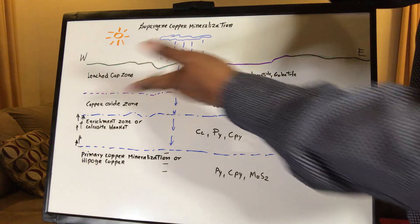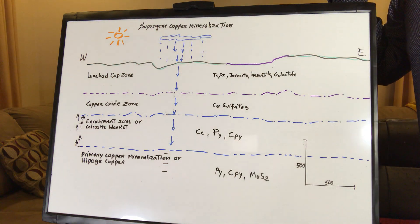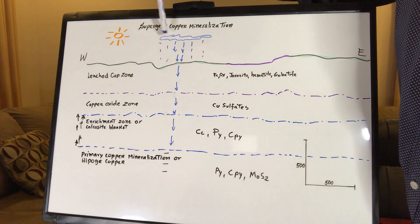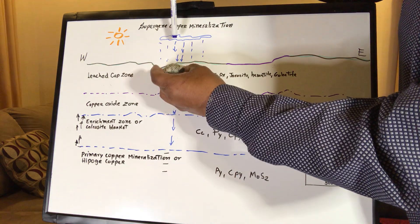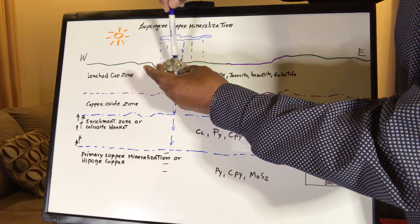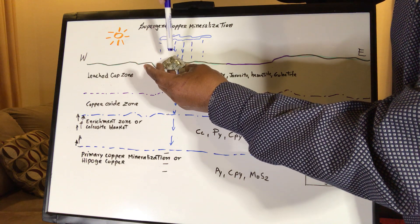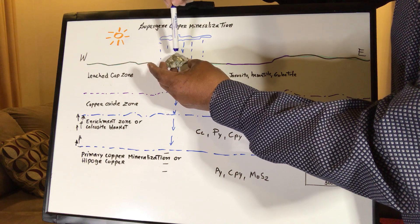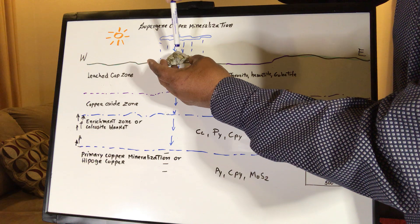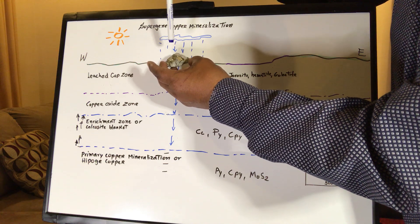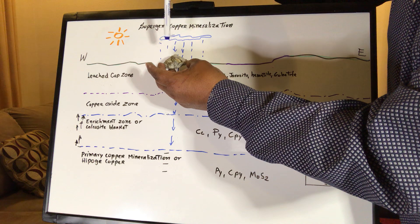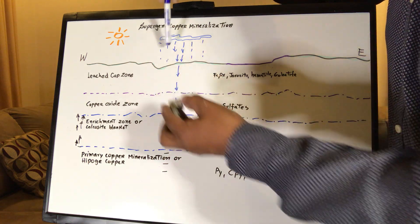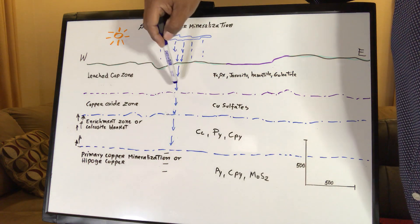And the third agent, very important, is meteoric water. So every season, every year, when the rain comes, it has this already broken and destroyed sulfide. And what happens when oxygen meets iron? Oxidize. And when oxygen meets sulfur, it's going to start to make sulfuric acid. So, and it's going to go deeper and deeper vertically.